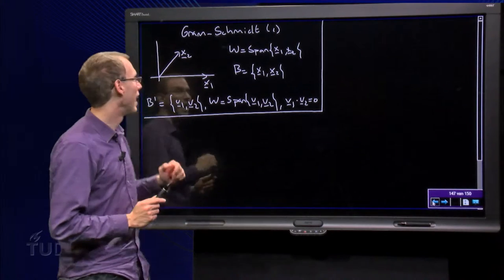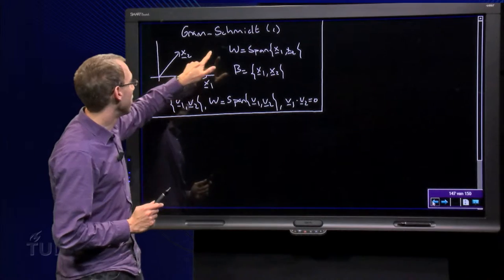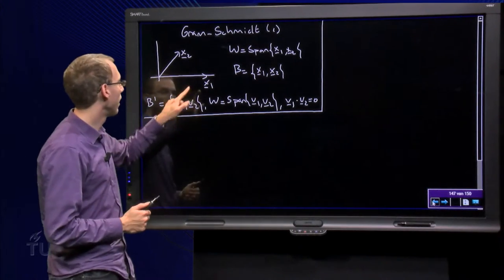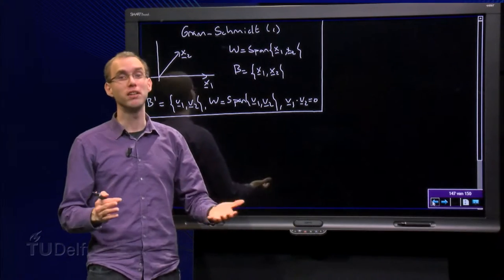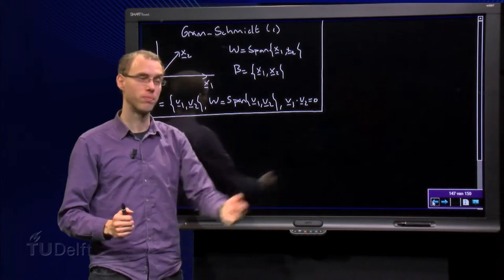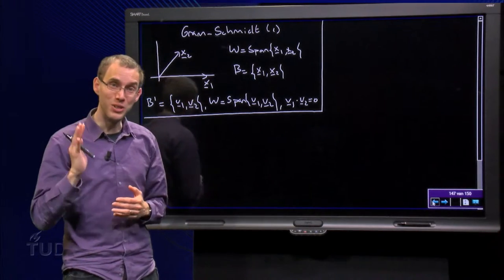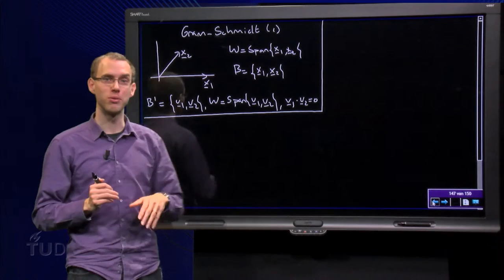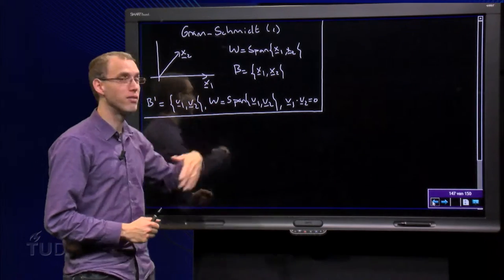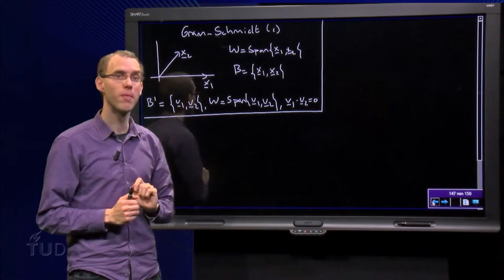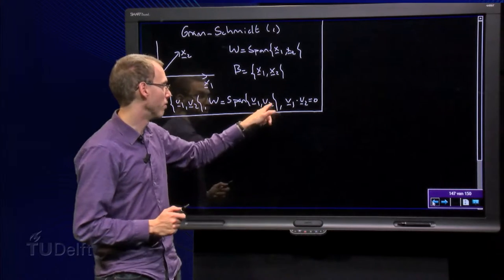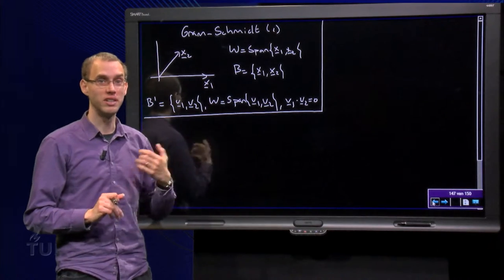So, what is the idea? I have a span of, say, two vectors in this first example, x1 and x2. They are independent but not orthogonal, so the basis consists of x1 and x2. Then I want to make a new basis, B', consisting of v1 and v2, such that the span of v1 and v2 is still W, but now such that v1 and v2 are orthogonal, so v1 inner product v2 equals zero. So, that is the plan.